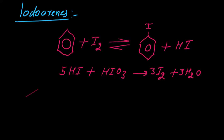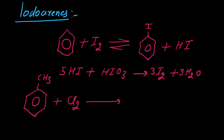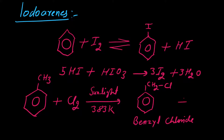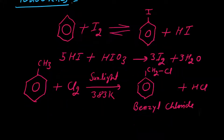अगर हमें toluene के साथ chlorine का reaction करना हो और dark में ना करके sunlight में करें, 383 Kelvin temperature condition पर, तो यहां पर side chain substitution होती है। Benzene ring से अटेच नहीं होके, toluene के CH3 का hydrogen replace होगा और halogen वहां अटेच हो जाएगा — इसको हम benzyl chloride बोलते हैं। Benzyl chloride की formation होगी और HCl निकल जाएगा।